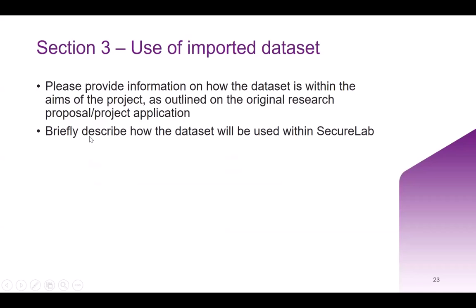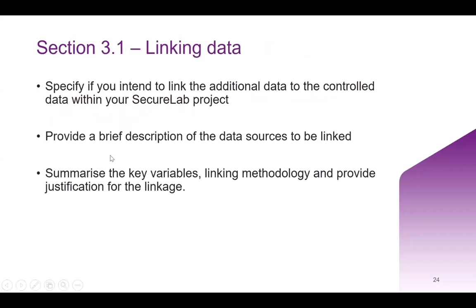Section three asks how you're going to use the imported data set within your SecureLab project. You'll be asked to provide information about how this data set fits within the scope of your research project as outlined in your original research proposal, and briefly describe how you're going to use it in SecureLab and how it will help your research. Include as much information as possible, because we use this to assess whether the request needs to be referred to the control data owners for approval. Also outline any data linking — how you'll link that data set to your control data sets, what variables are included, and provide justification for why that linking is important.